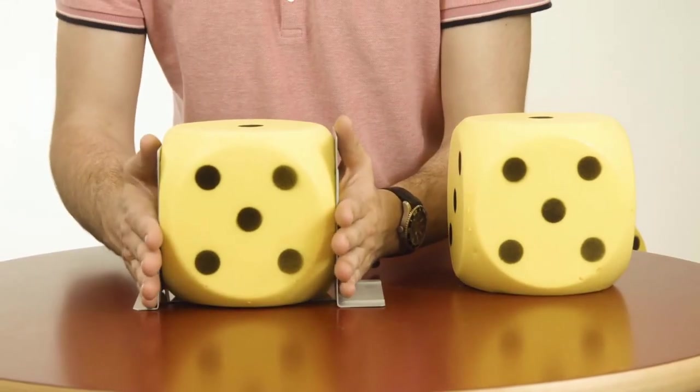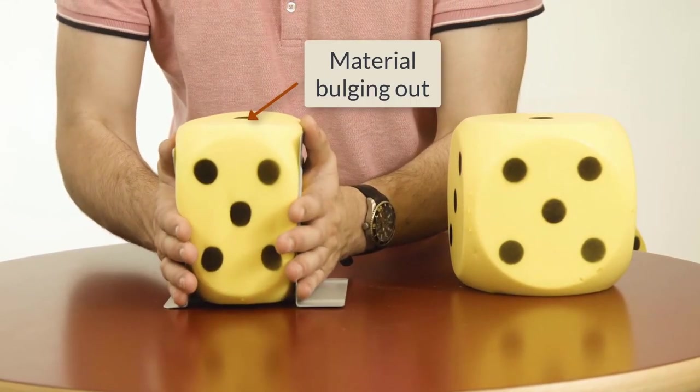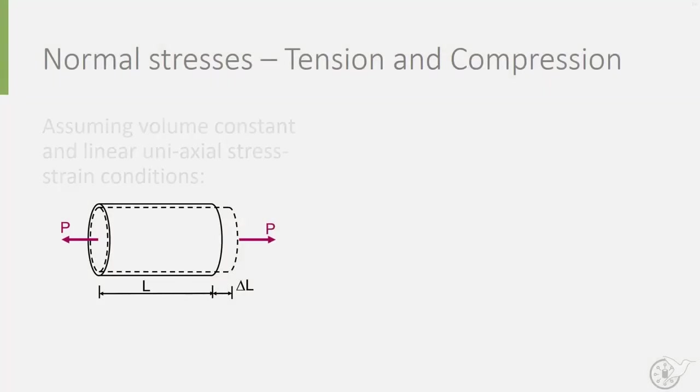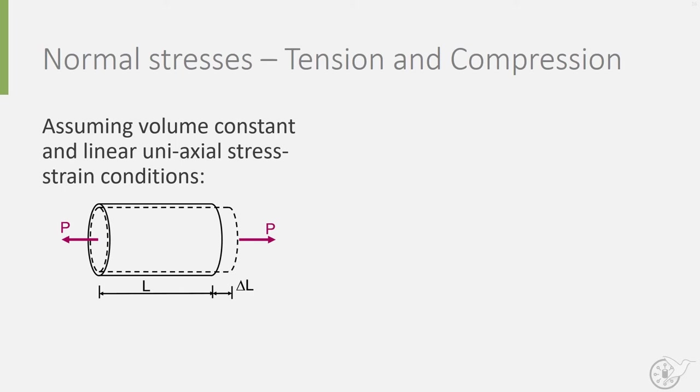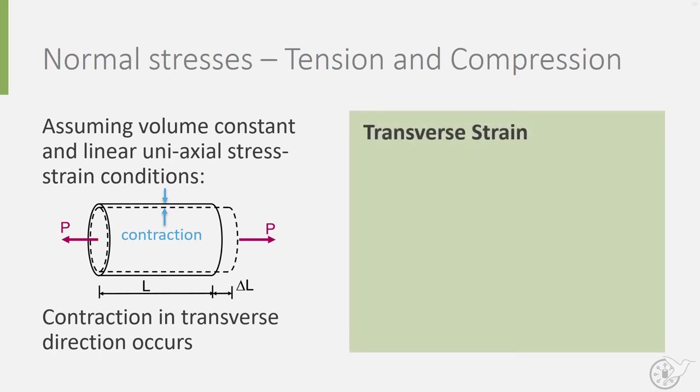When you extend or compress an object in one direction, it often contracts or expands in another direction. If we assume that the overall volume of the object remains constant, we can observe a second strain in the transverse direction of loading. This strain is called transverse strain, denoted by epsilon t.